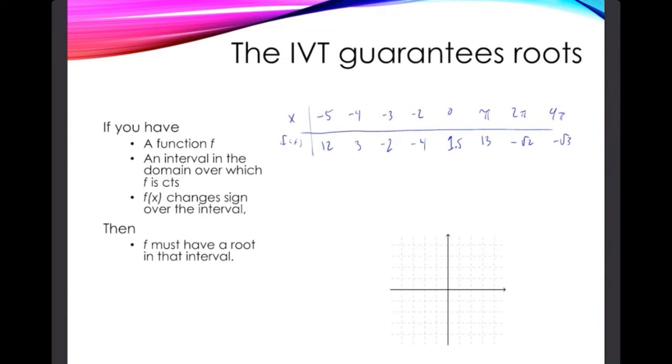And we want to answer the question, how many roots are guaranteed to exist? So look at these function values here. The intermediate value theorem says if f changes sign, there must be a root.